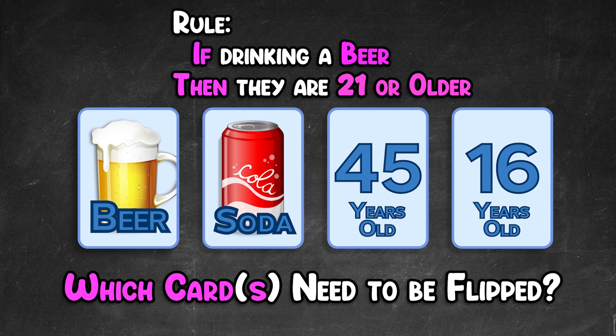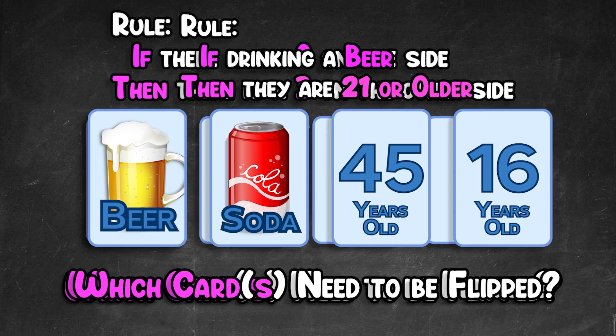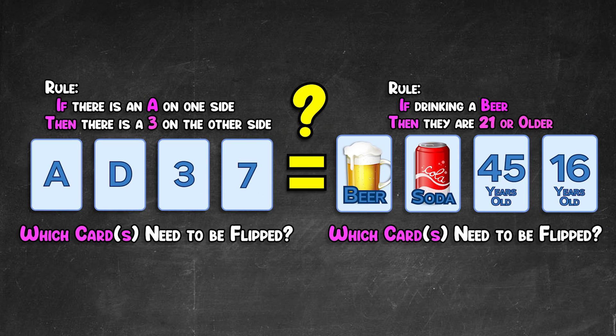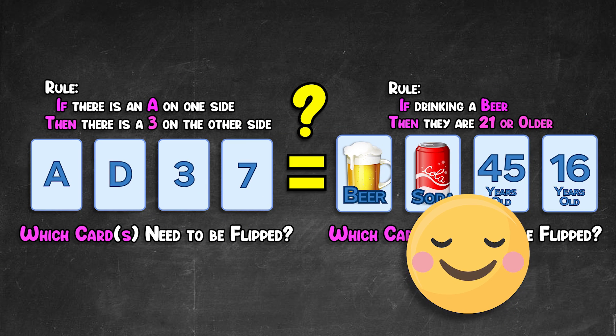Did you guess the beer and the 16 year old? You are correct! So how are these problems the same, and why is one so much easier to figure out than the other?